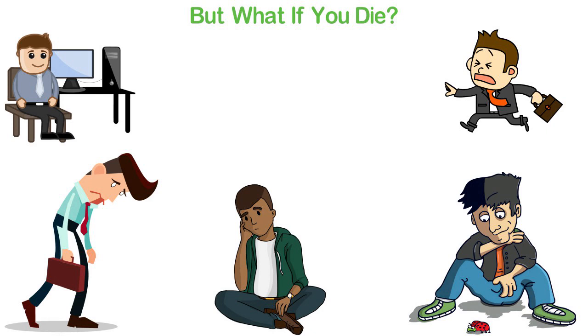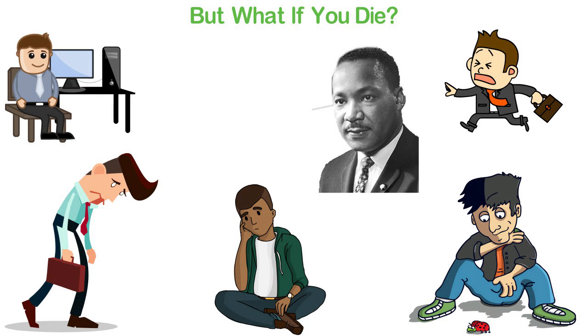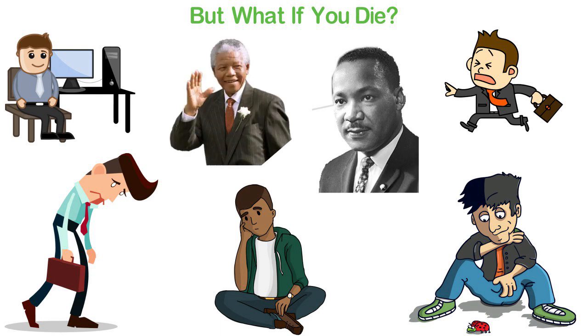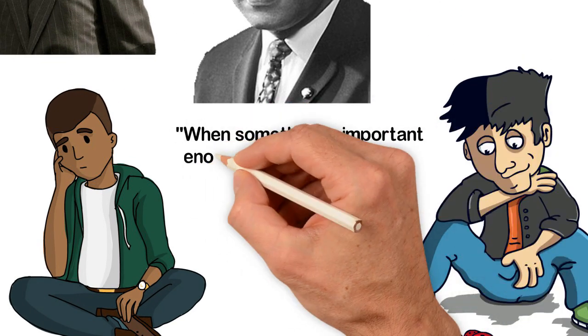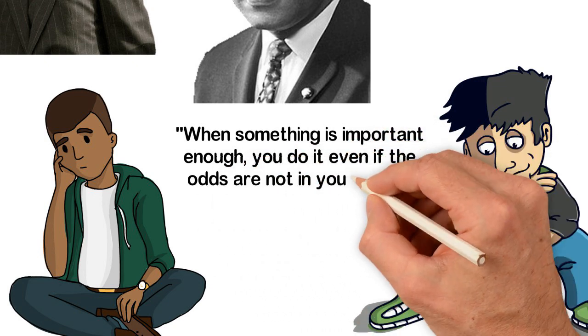Martin Luther King Jr. died at 39 and Nelson Mandela died at 95, yet they achieved pretty the same thing with their life. When something is important enough, you do it even if the odds are not in your favour.